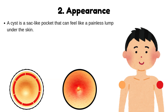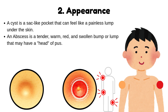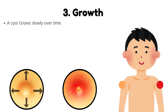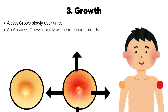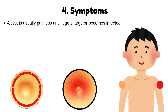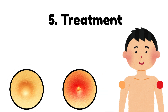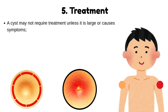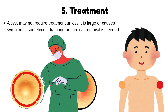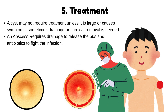Appearance: a cyst is a sack-like pocket that can feel like a painless lump under the skin. An abscess is a tender, warm, red, and swollen bump or lump that may have a head of pus. Growth: a cyst grows slowly over time, while an abscess grows quickly as the infection spreads. Symptoms: a cyst is usually painless until it gets large or becomes infected, whereas an abscess shows pain, redness, warmth, and inflammation. Treatment: a cyst may not require treatment unless it is large or causes symptoms, and sometimes drainage or surgical removal is needed. An abscess requires drainage to release the pus and antibiotics to fight the infection.